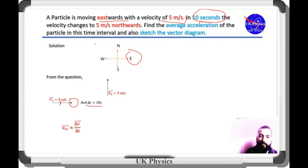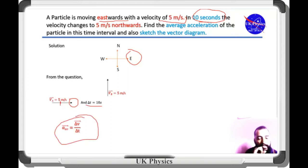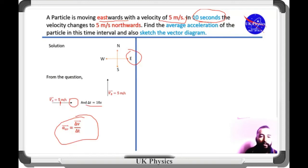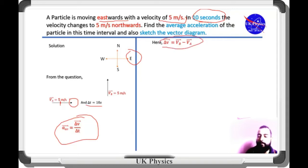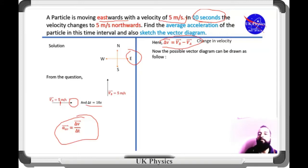To calculate the average acceleration, by definition, we have a formula. Average acceleration means the rate of change in velocity. So first we need to calculate the change in velocity, which can be calculated by the formula for ΔV = Vb − Va. And finally, we have to sketch out the vector diagram.